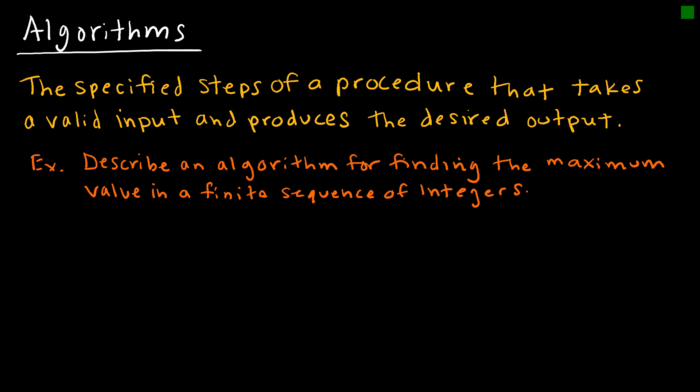Obviously there's no one right answer for this, but essentially what we want to do is start by setting the first value equal to our temporary maximum. So we're saying the first value in the sequence is our temporary max.